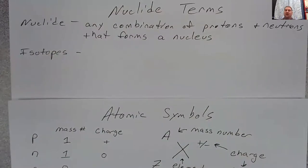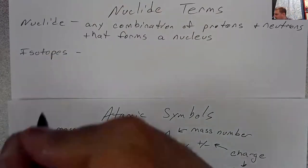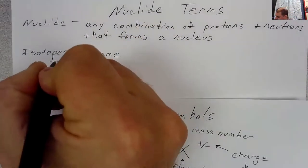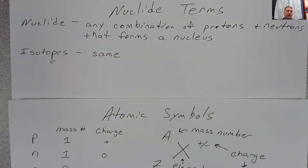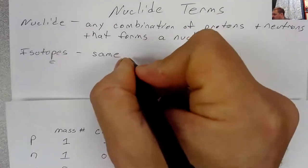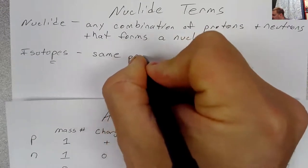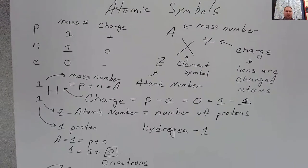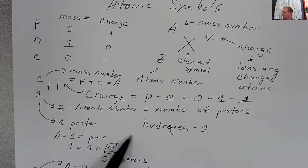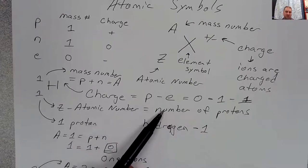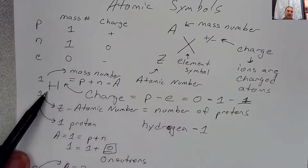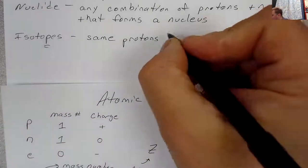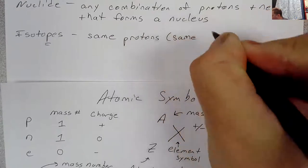And if you break that word down and you think about what it means, we see the prefix iso, which means same. And so what's the same here? Isotopes has a P in the name, and so P you should be thinking protons. So isotopes have the same protons. If they have the same number of protons, what's determined by the number of protons in an atom? Well, the atomic number is determined by the number of protons. And that also ends up determining the element. So if you change the number of protons, then you change the element. But if you have the same number of protons, then you really have the same element.